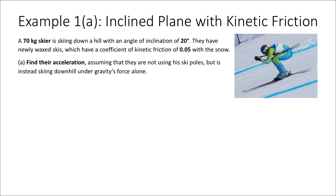For our first example, let's say that a 70-kilogram skier is skiing down a hill with an angle of inclination of 20 degrees. They have newly waxed skis, which have a coefficient of kinetic friction of 0.05 with the snow.